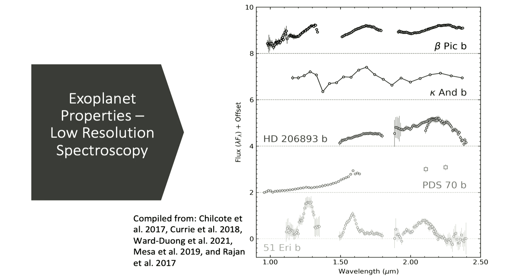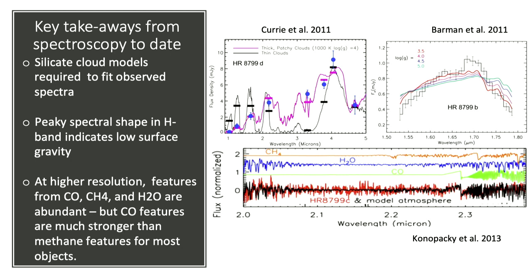You can see this clear methane absorption in our T-dwarf, missing in our L-dwarfs. The L-dwarf has a triangular H-band shape — a sign of low surface gravity. Our one protoplanet has a completely different-looking spectrum compared to the more mature planets. Quick takeaways from spectroscopy to date: from low-resolution spectroscopy and photometry, we find that silicate cloud models fit the data better. We've also been seeing this triangular H-band shape in HR 8799, caused by low surface gravity. At higher resolution, we start to see molecular features — mostly CO, CH4, and water.